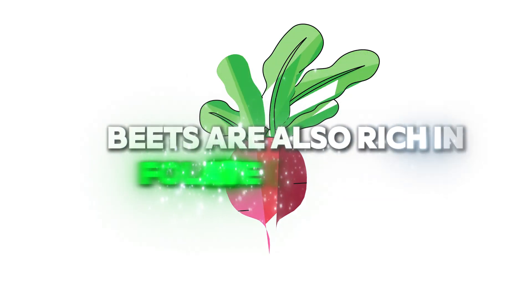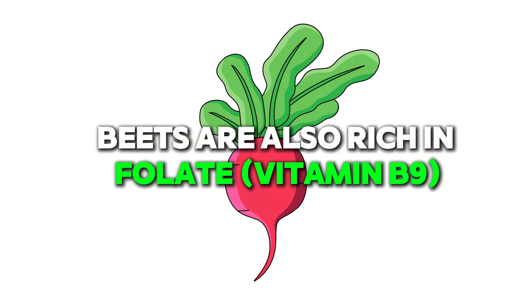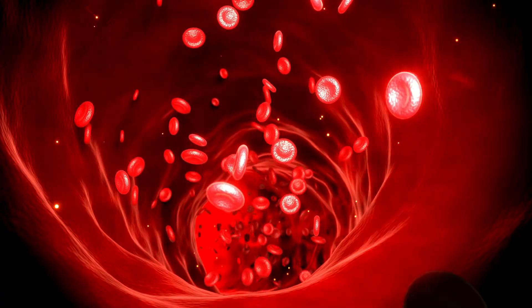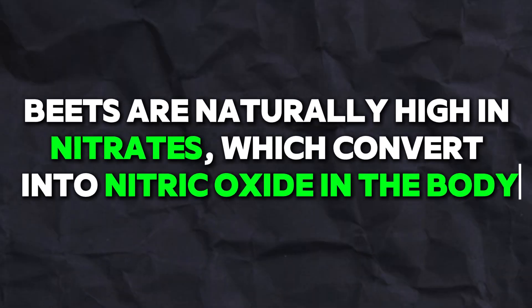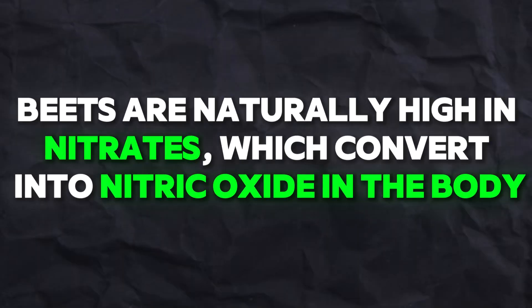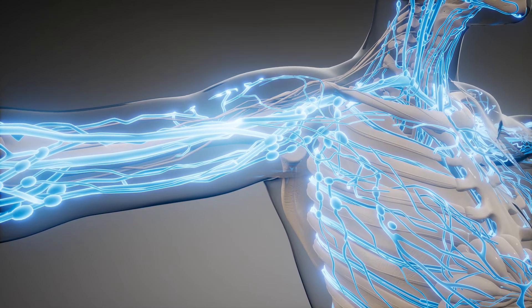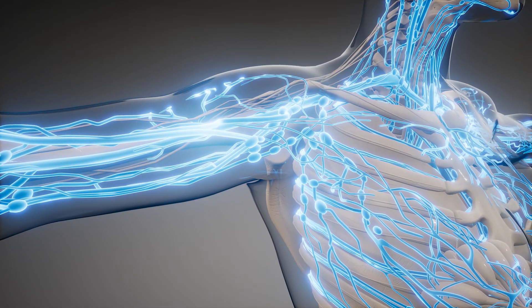Beets are also rich in folate, vitamin B9, which supports cell growth and function, crucial for maintaining healthy blood vessels and reducing the risk of heart disease and stroke. Additionally, beets are naturally high in nitrates, which convert into nitric oxide in the body. This compound helps lower blood pressure by relaxing and widening blood vessels.